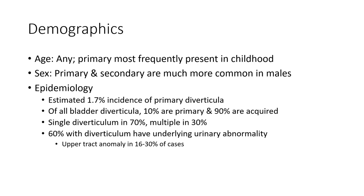Demographics: primary diverticula most frequently present in childhood, and both primary and secondary are much more common in males. Epidemiology: estimated 1.7% incidence of primary diverticulum. Of all bladder diverticula, 10% are primary and 90% are acquired. Single diverticulum occurs in 70%, multiple in 30%. 60% of bladder diverticula have an underlying urinary abnormality, and upper tract anomaly is seen in 16 to 30% of cases.